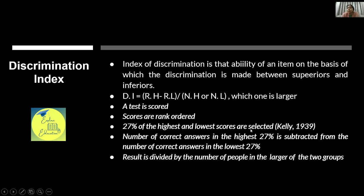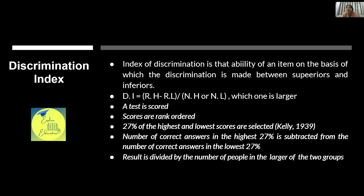After rank-ordering, the top 27% and bottom 27% of scores are selected as the highest and lowest groups. We count correct answers in the highest 27%, subtract correct answers in the lowest 27%, then divide by the number of people in the larger of the two groups. This gives the discrimination index.